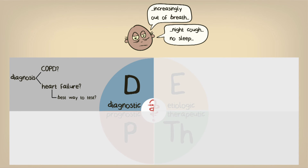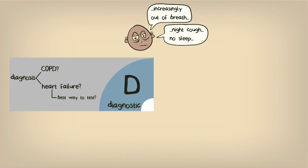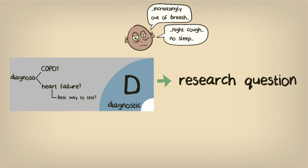Now that we've established the kind of research we are interested in conducting, it's time to begin phrasing our research question. A relevant question could be: how can we use patient information and test results to determine whether or not a COPD patient with increasing shortness of breath also has heart failure?